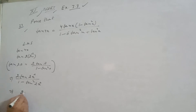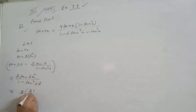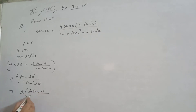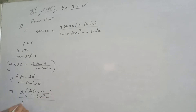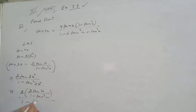Again, we can apply the formula of tan 2x. What is the formula of tan 2a? It is 2 tan a upon 1 minus tan square a. So the formula of tan 2x is 2 tan x upon 1 minus tan square x.